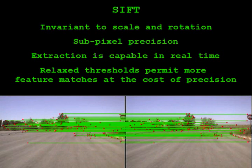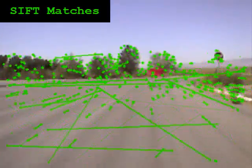First, SIFT features are extracted from each image of forward-looking video. These features are matched in the image sequence to provide sparse correspondences. Matching thresholds are lowered to allow for more correspondences to be found.